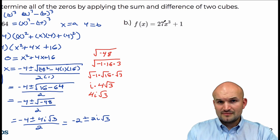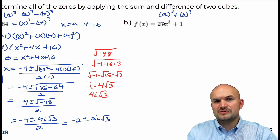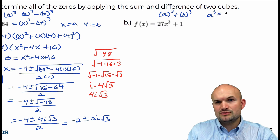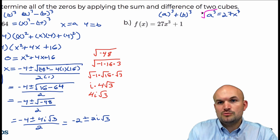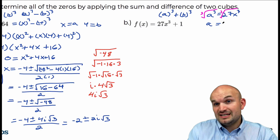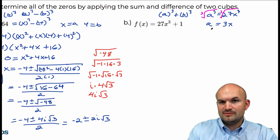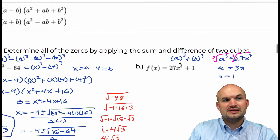The next example has a number and a variable, so we want to write this as a cubed plus b cubed. We need to take the cube root. So a cubed equals 27x cubed — taking the cube root of both sides, the cube root of a cubed is a, the cube root of 27 is 3 because 3 times 3 times 3 is 27, giving us a equals 3x. And if b cubed equals 1, then b equals 1. So 27x cubed is a perfect cube and 1 is a perfect cube, and we're using the sum of two cubes formula.